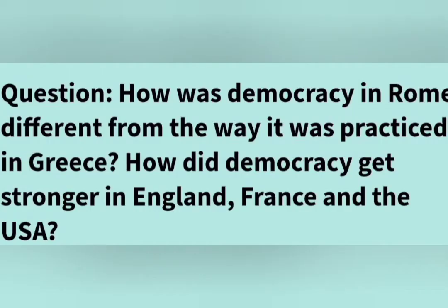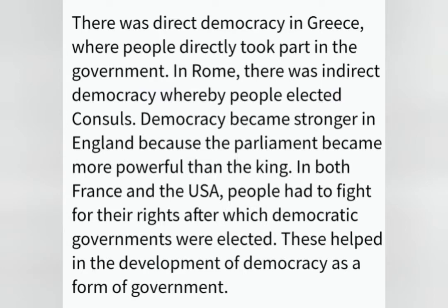Now, children, I have another highlighted question: How was democracy in Rome different from the way it was practiced in Greece? How did democracy get stronger in England, France, and the USA? The general explanation is: there was direct democracy in Greece where people directly took part in the government. In Rome, there was indirect democracy whereby people elected consuls. Democracy became stronger in England because Parliament became more powerful than the King. In both France and the USA, people had to fight for their rights, after which democratic governments were elected. These developments helped in the growth of democracy as a form of government.